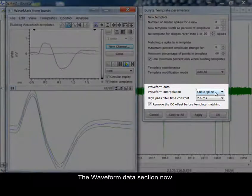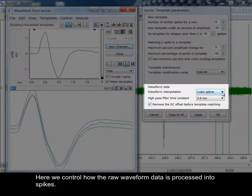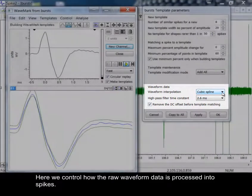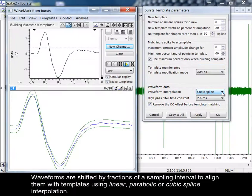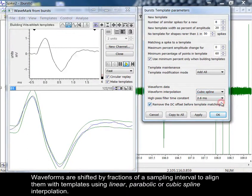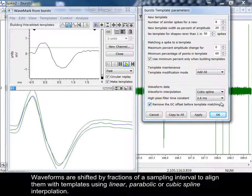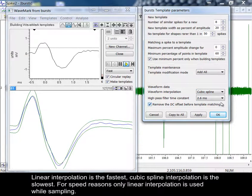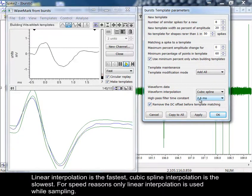The waveform data section now. Here we control how the raw waveform data is processed into spikes. Waveforms are shifted by fractions of a sampling interval to align them with templates using linear, parabolic, or cubic spline interpolation. Linear interpolation is the fastest. Cubic spline interpolation is the slowest. For speed reasons, only linear interpolation is used while sampling.